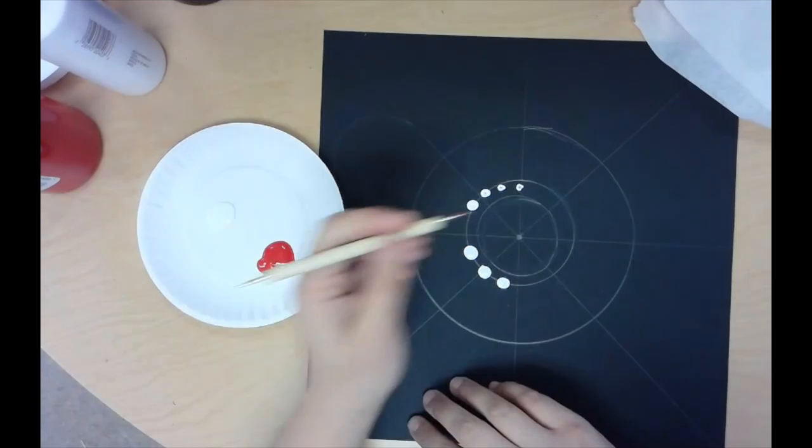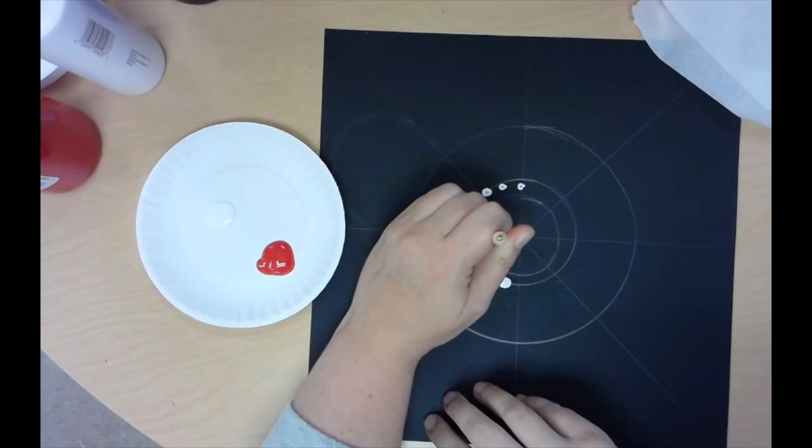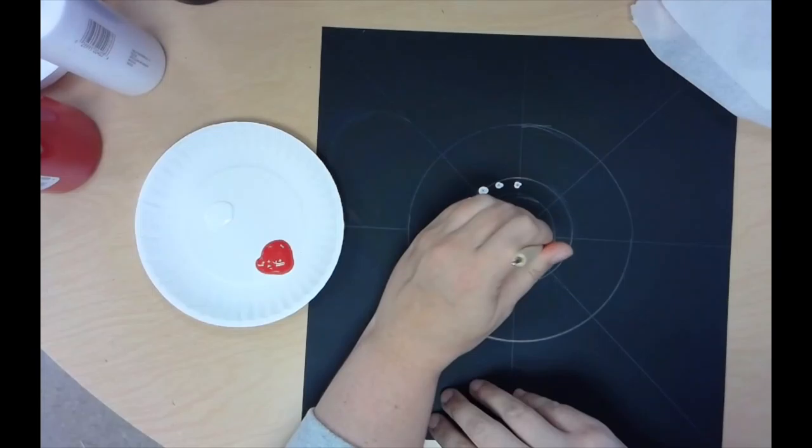When you are done using that color, all you'll do is you'll just wipe it off on your paper towel the best that you can, get it nice and clean, and then you can put it away. It cleans off really easily. If you're using a smaller one, same thing applies. You just have to get more paint every time. And I know those are really little, but I just wanted to show you kind of the difference.